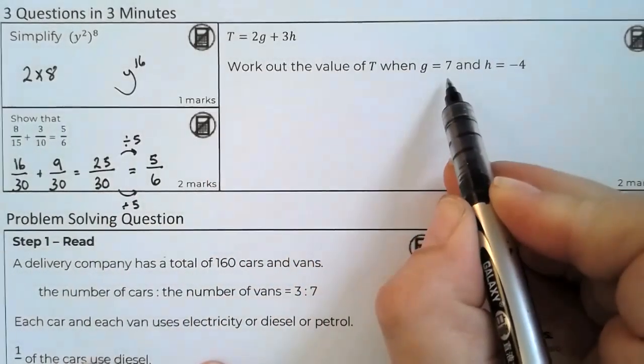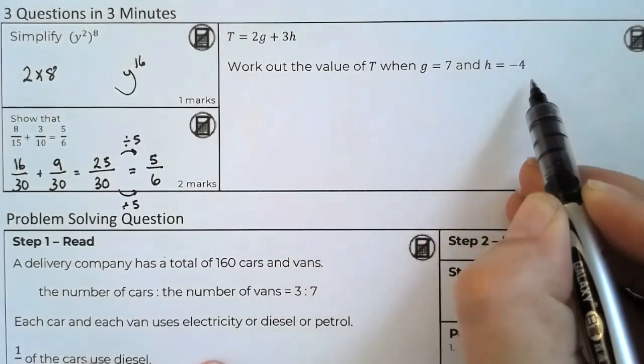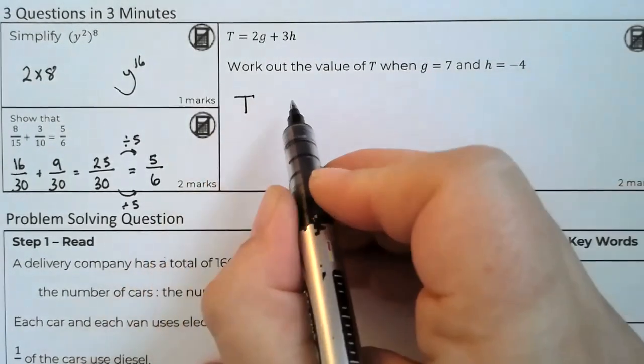Work out the value of t when g is 7 and h is negative 4, so it's a substitution question. We want to find t.